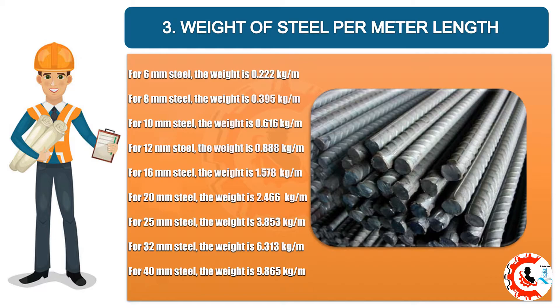Three: weight of steel per meter length. For 6 mm steel: 0.222 kg/m. For 8 mm: 0.395 kg/m. For 10 mm: 0.616 kg/m. For 12 mm: 0.888 kg/m. For 16 mm: 1.578 kg/m. For 20 mm: 2.466 kg/m. For 25 mm: 3.853 kg/m. For 32 mm: 6.313 kg/m. For 40 mm: 9.865 kg/m.